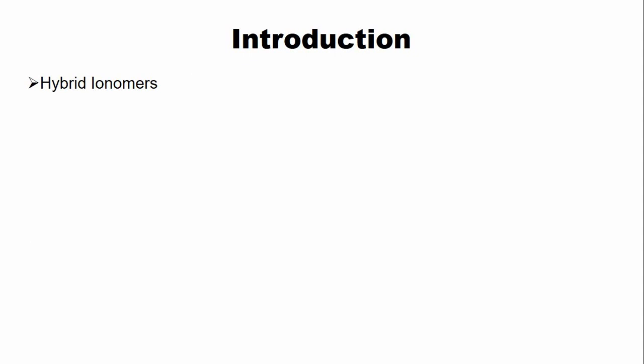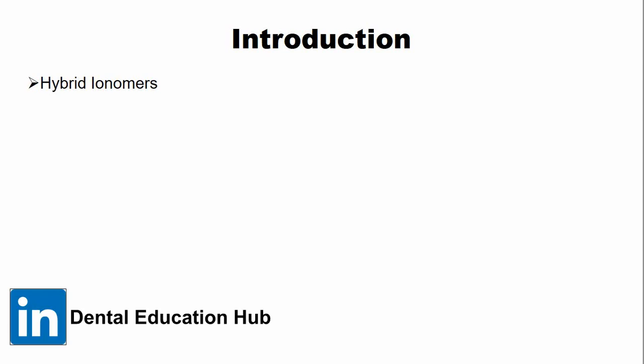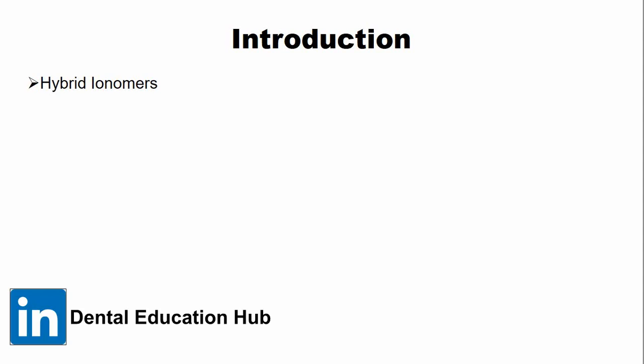The resin modified glass ionomer cement is also known as hybrid ionomer. The reason it is known as hybrid ionomer is because it contains the properties of both the glass ionomer and the resin composites — it combines the advantages of both materials.